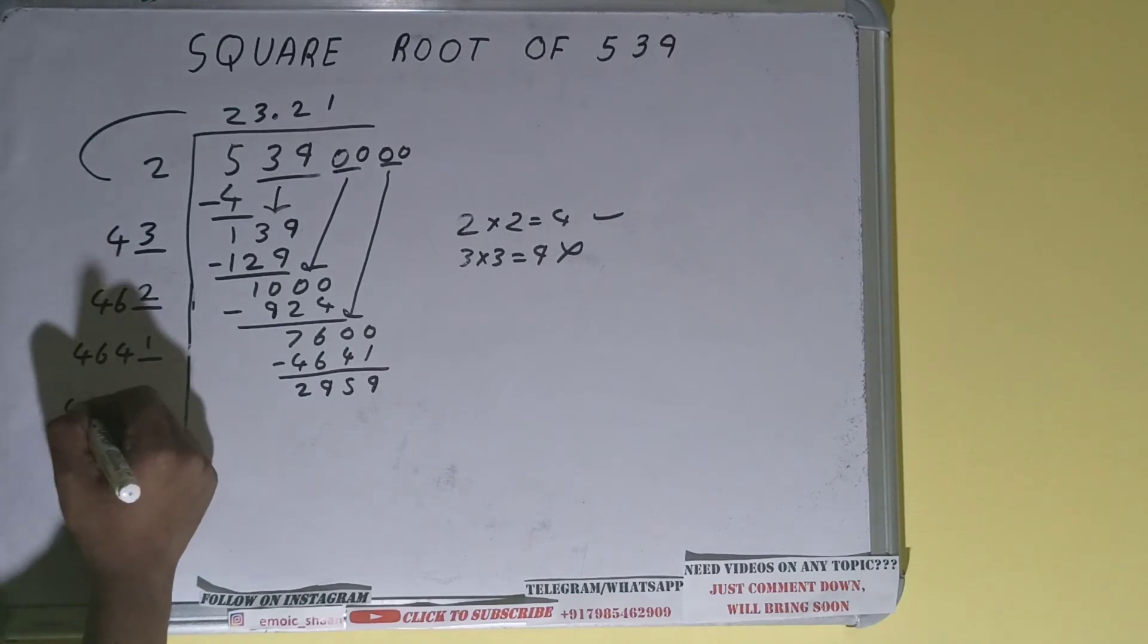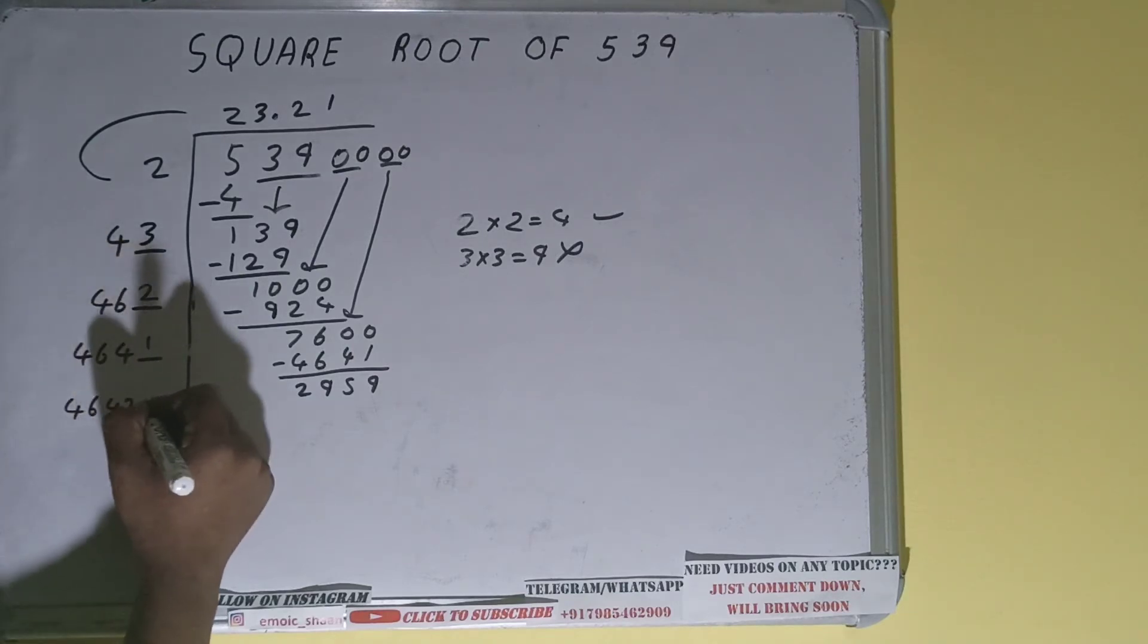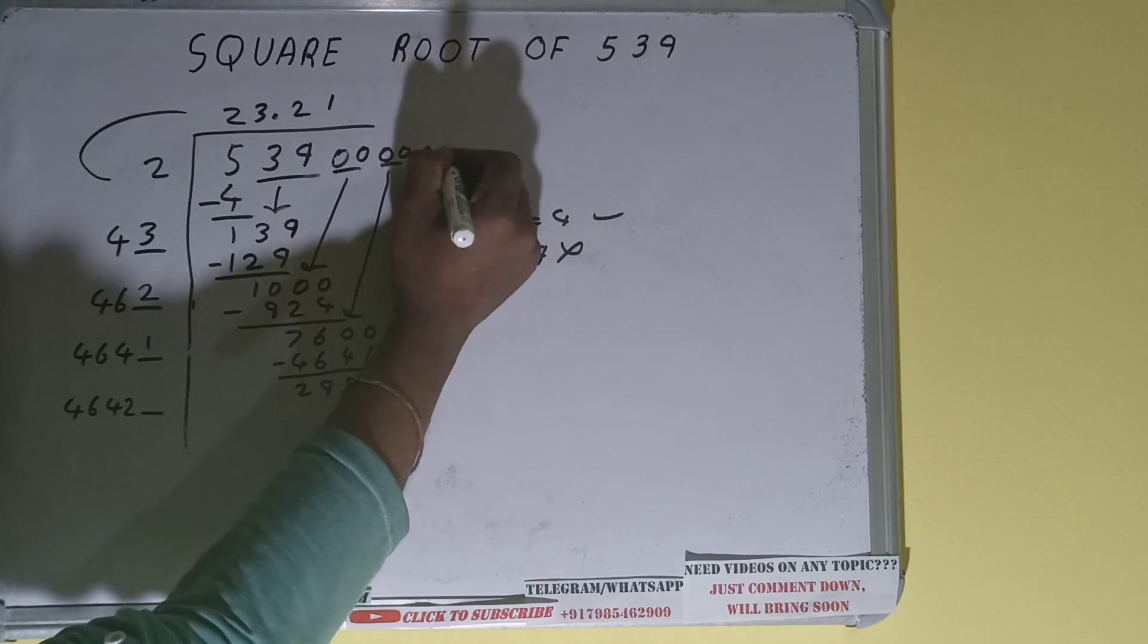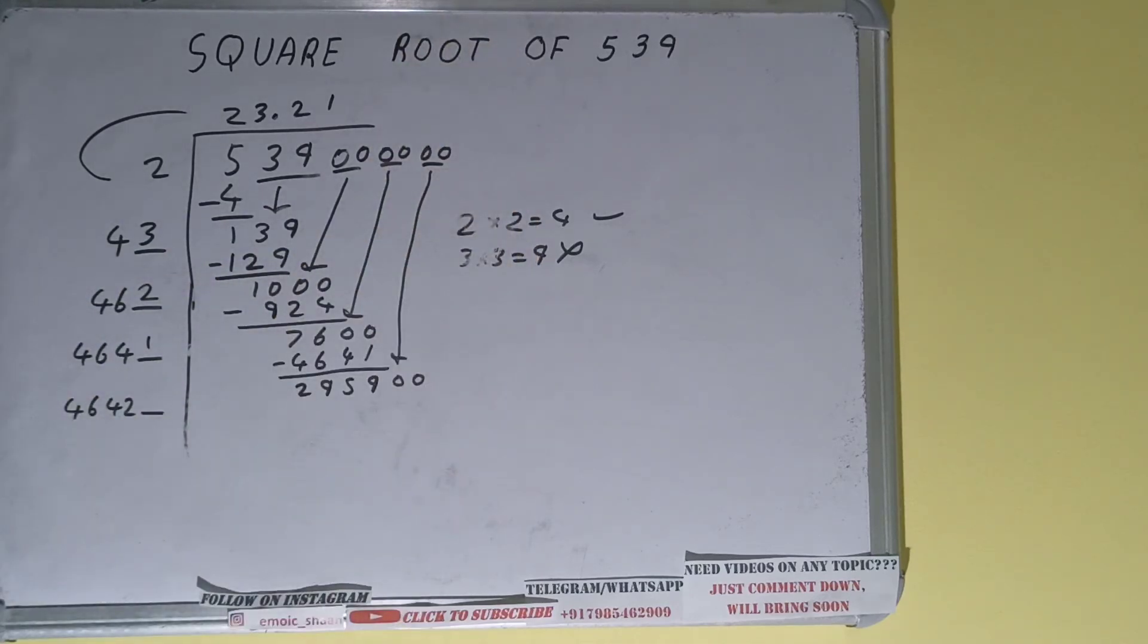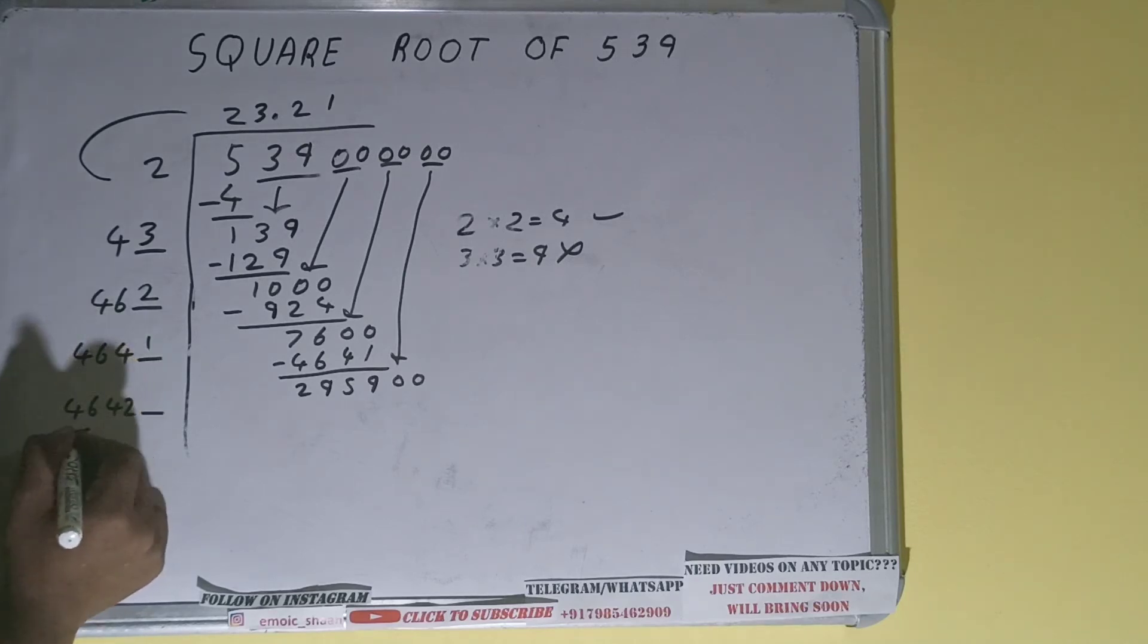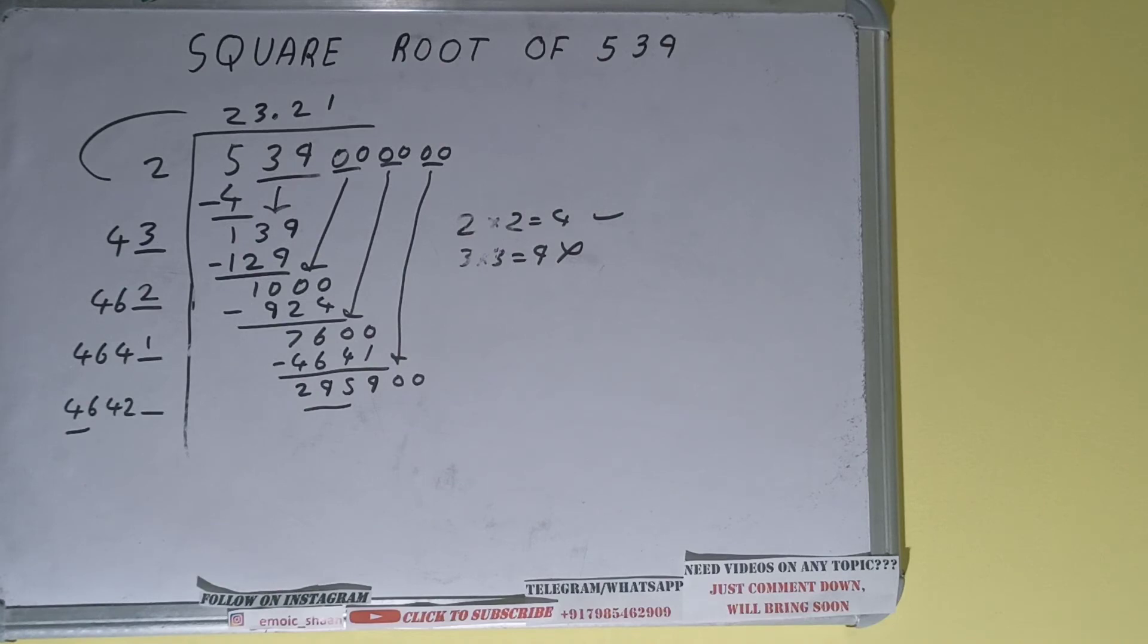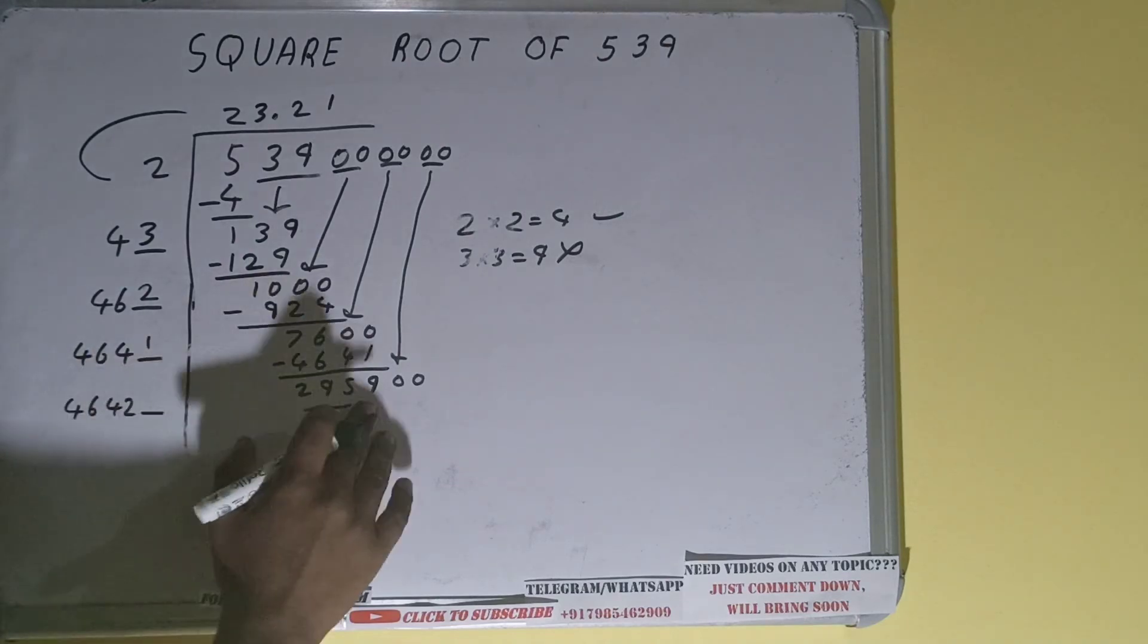...plus one will be 4642, and one digit extra. And this number we need to make it big, so bring the next pair of zeros down and it will become as 295900. Now compare this 46 with this 295, so 496 is 276. So we can try six times.